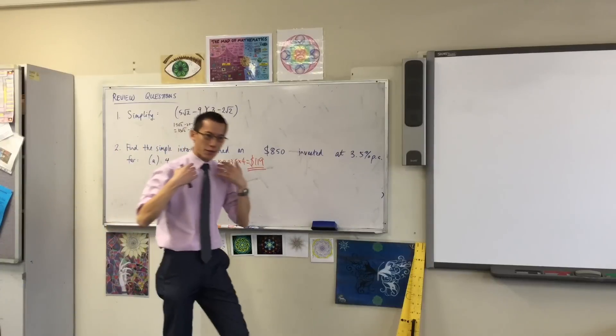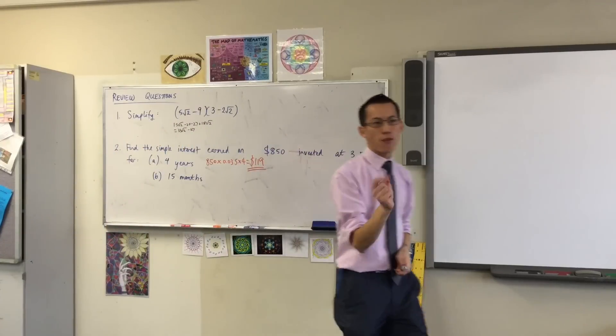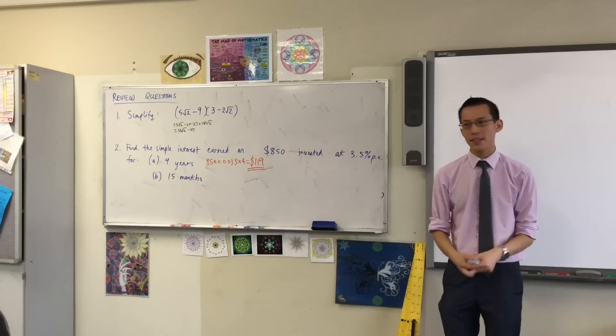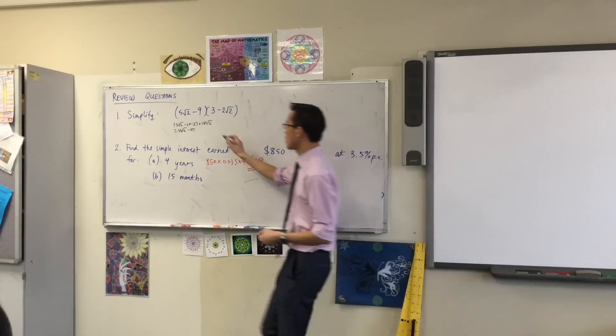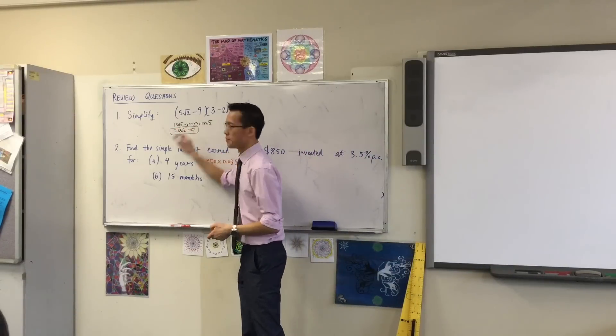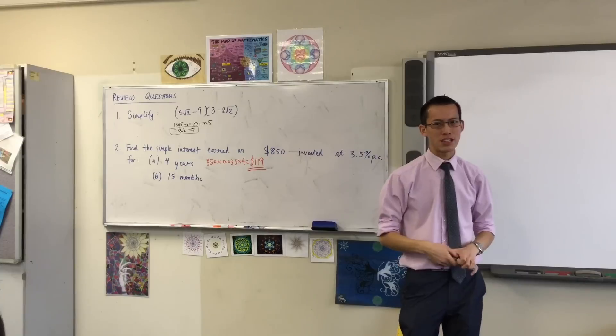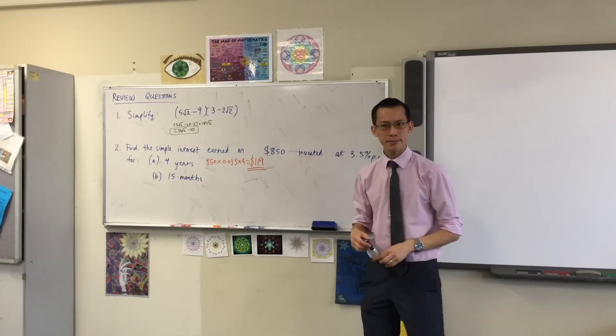You can see a lot of stuff simplifies out before you even put pen to paper. When you look at that question, what clues are there that what you ought to end up with should be quite simple? Anyone see any clues?